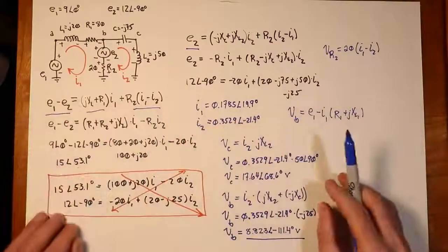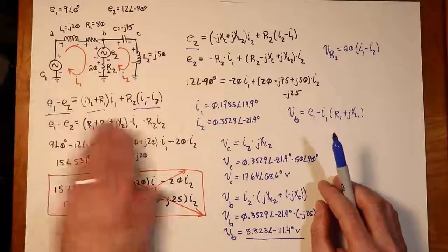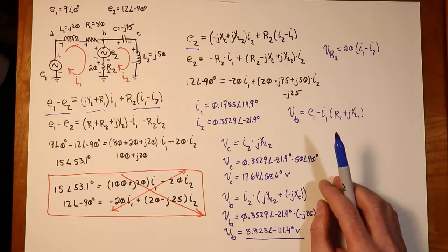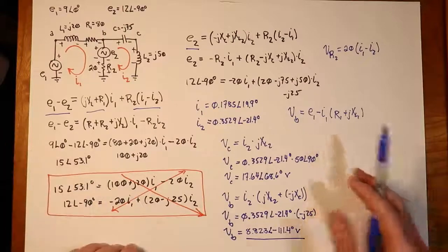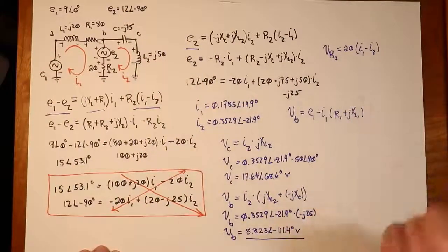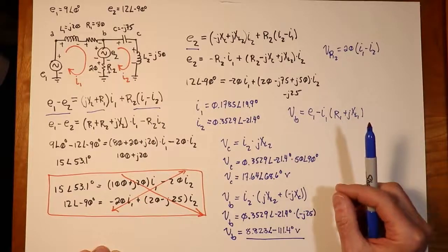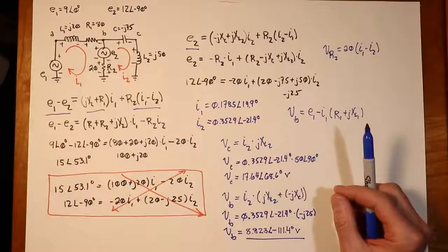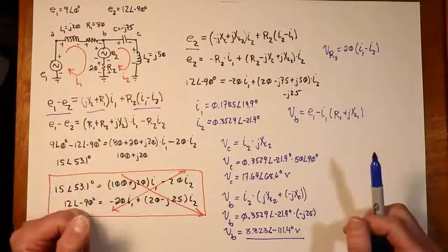And then there was this sort of inspection method where the limitation was we just have to have current sources. And we could, just by inspecting the circuit, build our equations directly. Very quick, very efficient. Well, it turns out there's an inspection method for mesh as well. And like nodal, there is also a limitation to it in that the version for mesh requires just voltage sources. So we'll take a look at that next time.